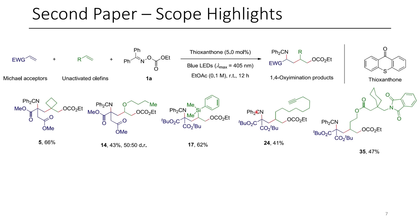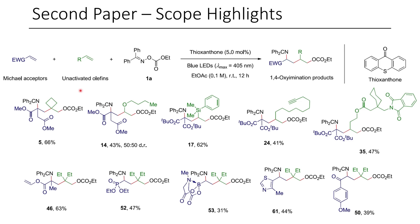In addition to screening different unactivated olefins, they also screened different Michael acceptors. With compound 46, they have a vinyl ester — that's not a problem, the vinyl group stays there. A vinyl phosphonate was also used, as well as a B-MITA complex. MITA is an emerging motif worth looking into. They also show more complex examples such as a heterostyrene and an alpha-beta unsaturated ketone. While all examples shown use 1A, they also explore a few other analogs in the manuscript.